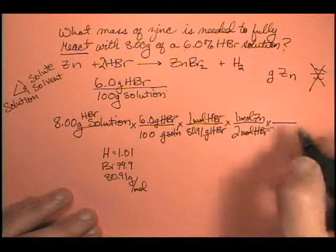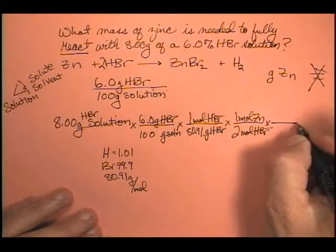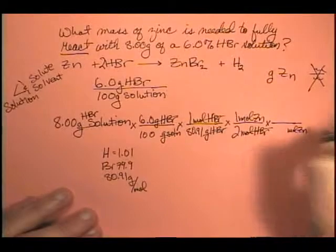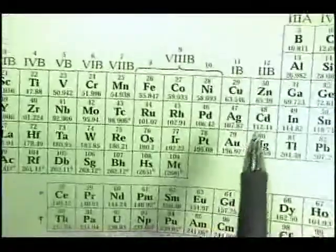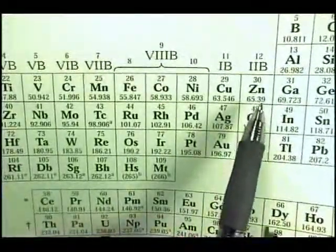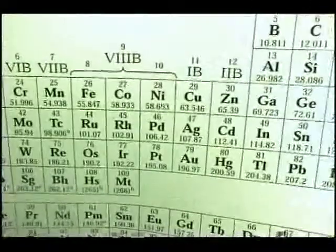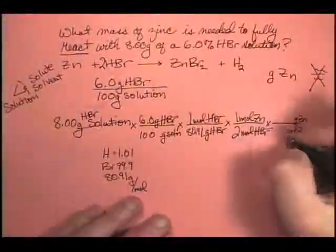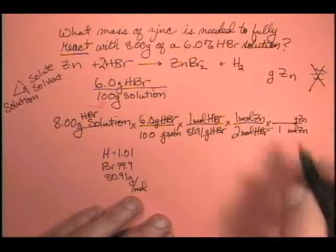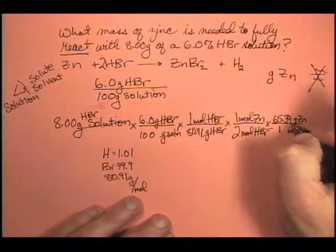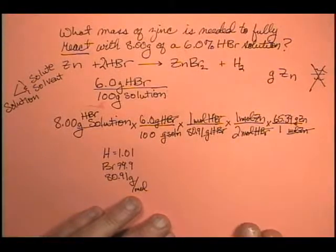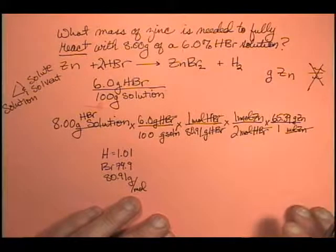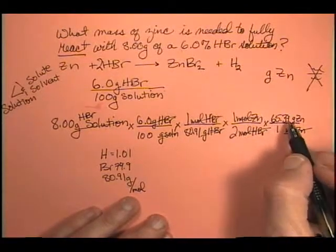So my last conversion, we have to go from moles of zinc to grams of zinc. Well, where can I find that? Molar mass on the periodic table. And here we are with zinc. What is that? 65.39 grams per mole. So I know that 1 mole of zinc is 65.39 grams of zinc. Moles of zinc cancel. It's kind of hard to read. That's 65.39.